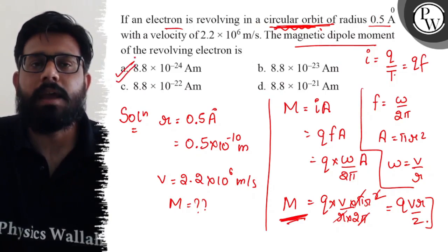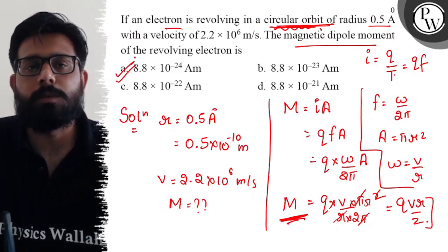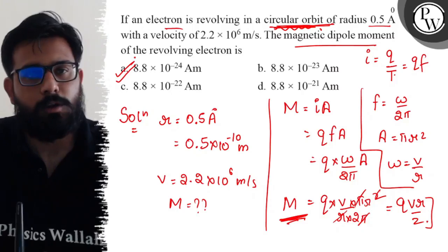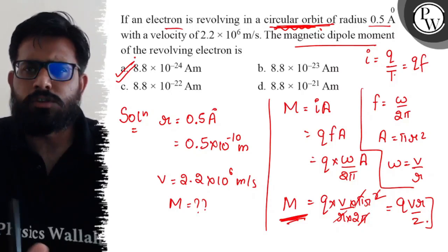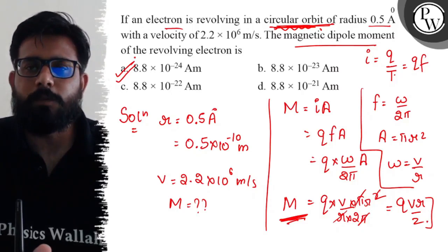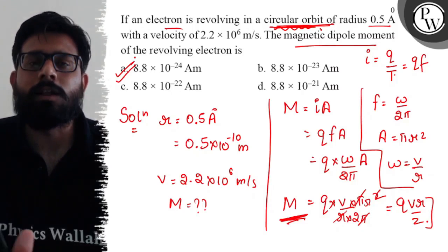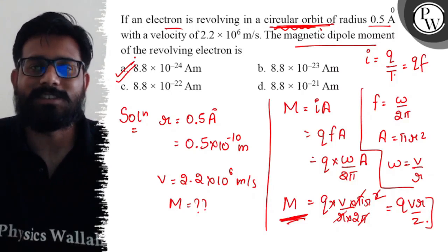The magnetic dipole moment comes out to be 8.8 × 10⁻²⁴ A·m, which matches option A. So option A is absolutely correct. I hope you got the concept of this question — all the very best!